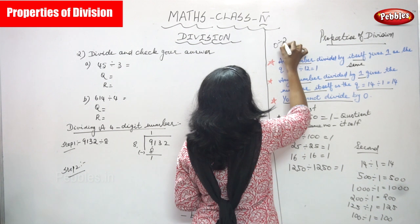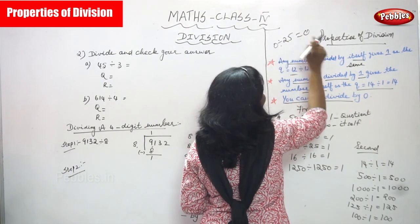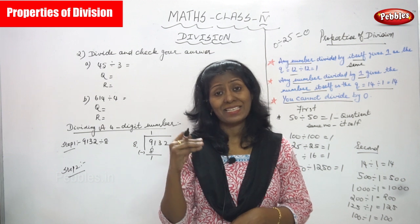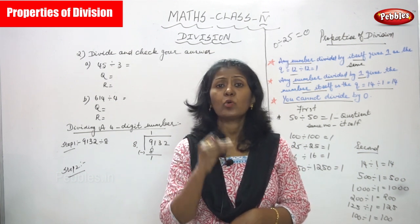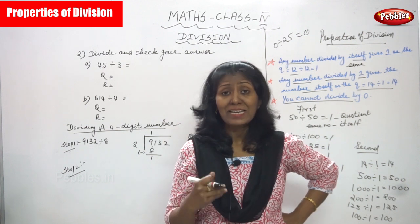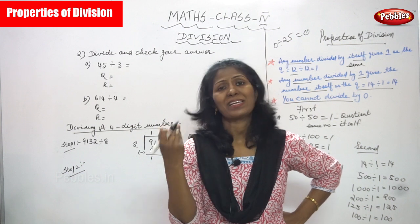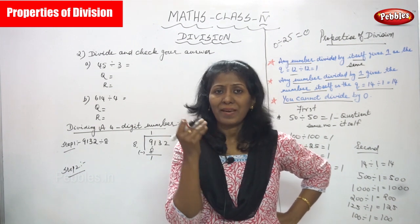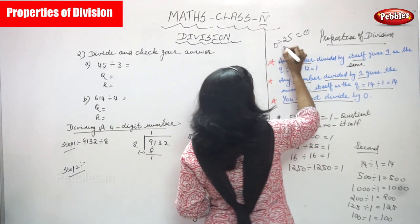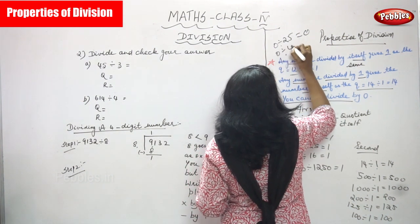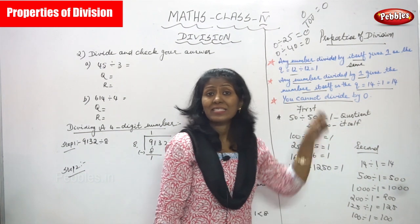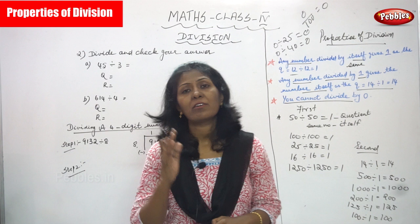However, 0 divided by any number gives 0. This is also a property — 0 becomes the quotient. For example: 0 divided by 25 gives 0; 0 divided by 100 gives 0; 0 divided by 1000 gives 0; and 0 divided by 40 gives 0 as the quotient.